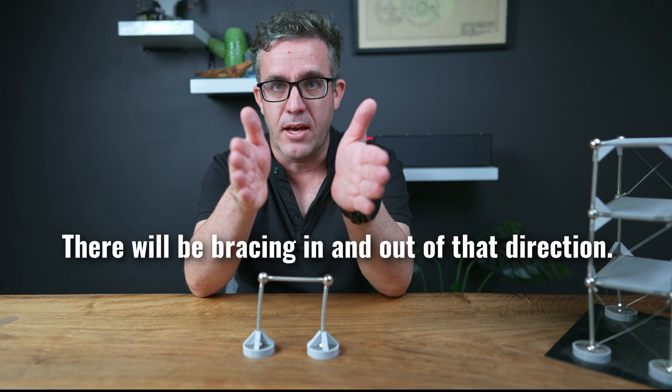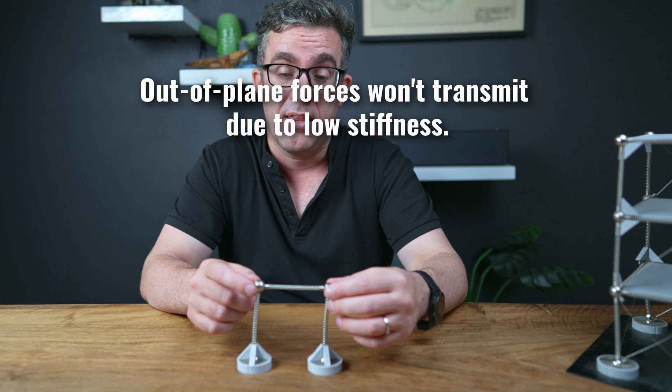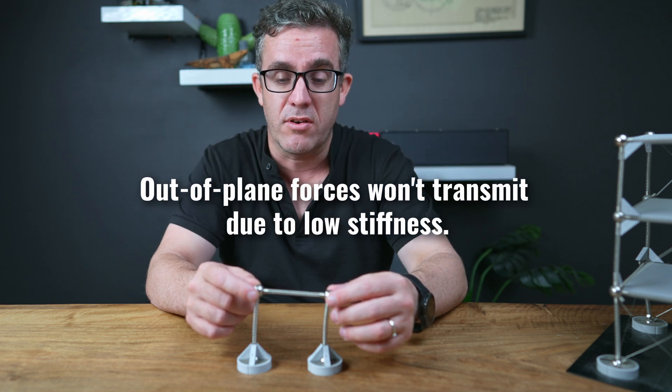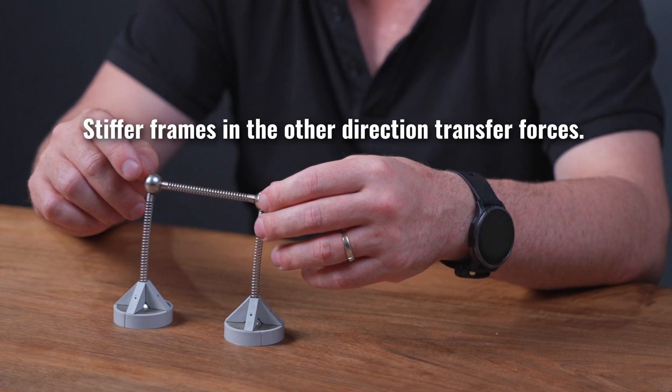So any frame system should be able to be broken down in this way, especially if you've got bracing only in one direction for that frame system. What there will be is bracing in the other direction. The force won't be transmitted in that direction because it won't be stiff enough.